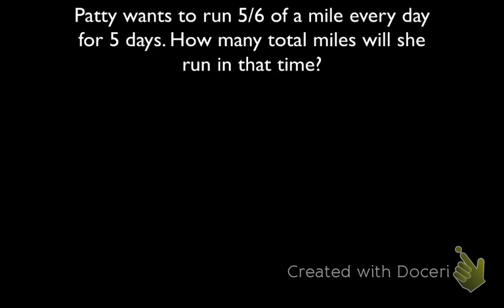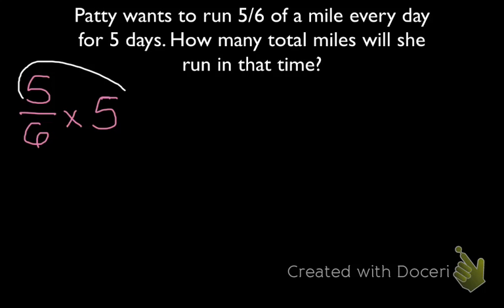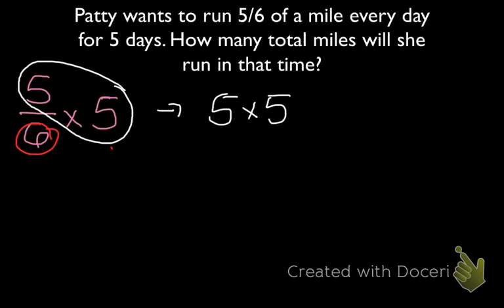Alright, let's solve this. We know that Patty wants to run 5 sixths of a mile every day for 5 days. If I were to set this up as a multiplication equation, that would be 5 sixths times 5. What I want to do is multiply my whole number by my fraction, so that would give me 5 times 5, and then take the product of that and divide it by 6.